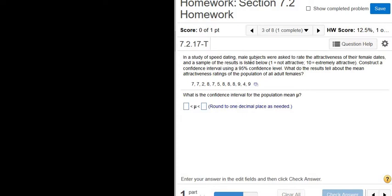In a study of speed dating, male subjects were asked to rate the attractiveness of their female dates and a sample of the results is listed below. So 1 is not attractive and 10 is extremely attractive. We have to construct a confidence interval using a 95% confidence level.